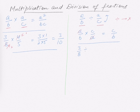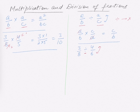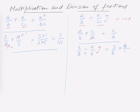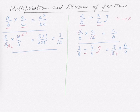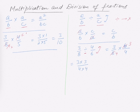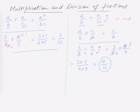Now let's do the division example: 3/8 divided by 4/6. We change divide to multiply and reverse the term to get 6/4, so this becomes 3/8 times 6/4. We can cancel: 2 times 3 is 6, and 2 times 4 is 8, leaving 3 and 4. So we have 3 times 3 over 4 times 4 — that's 9 over 16.